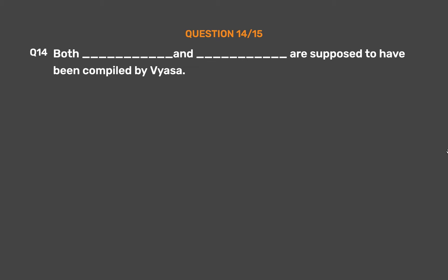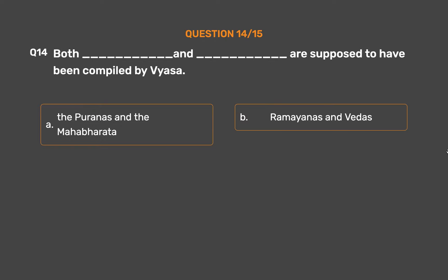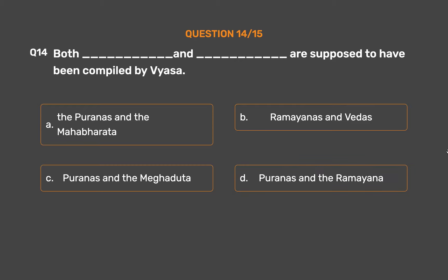Question No. 14. Both these texts are supposed to have been compiled by Vyasa. Option A: The Puranas and the Mahabharata. Option B: Ramayana and Vedas. Option C: Puranas and the Meghaduta. Option D: Puranas and the Ramayana.